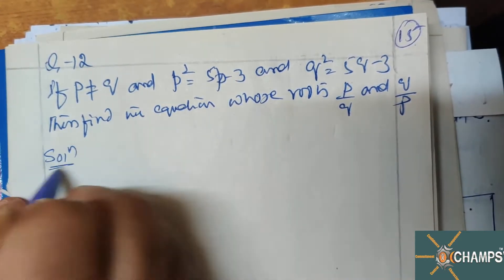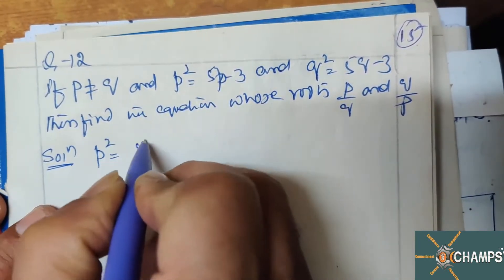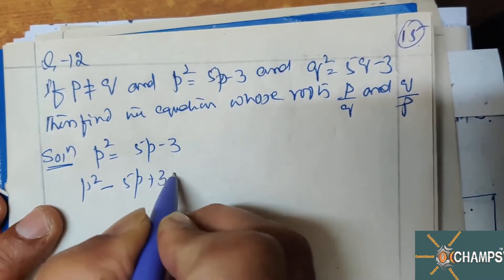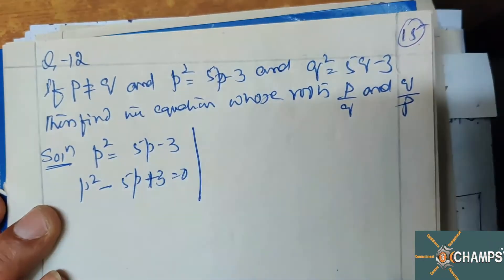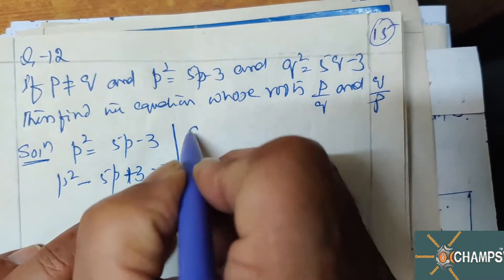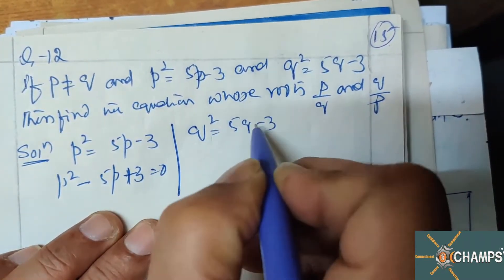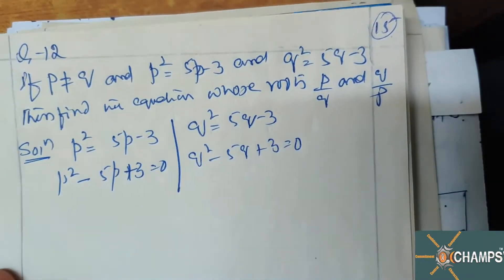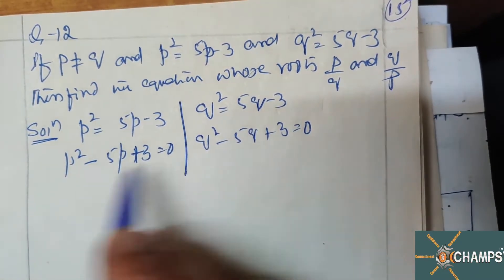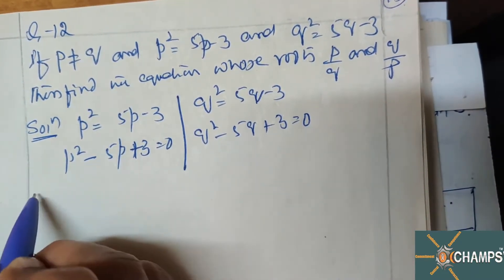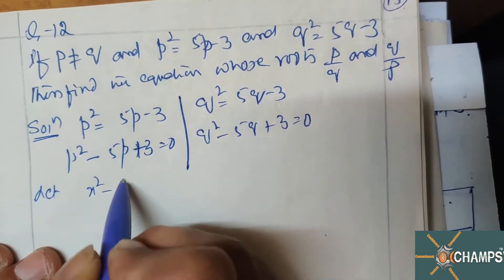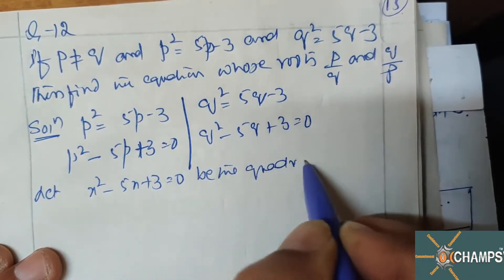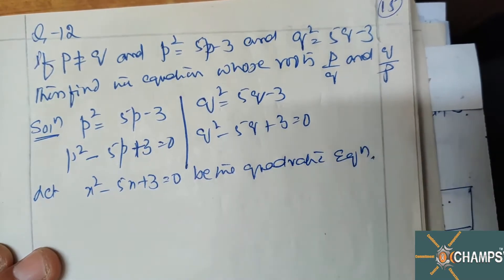Now look at the solution. p² = 5p - 3 can be written as p² - 5p + 3 = 0. Similarly, q² = 5q - 3 gives q² - 5q + 3 = 0. Notice these two equations are the same in form. Let x² - 5x + 3 = 0 be the quadratic equation.